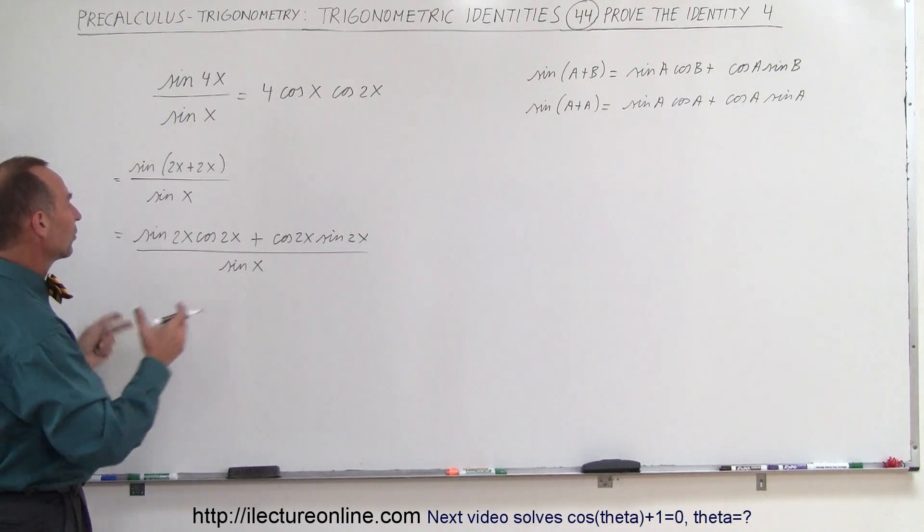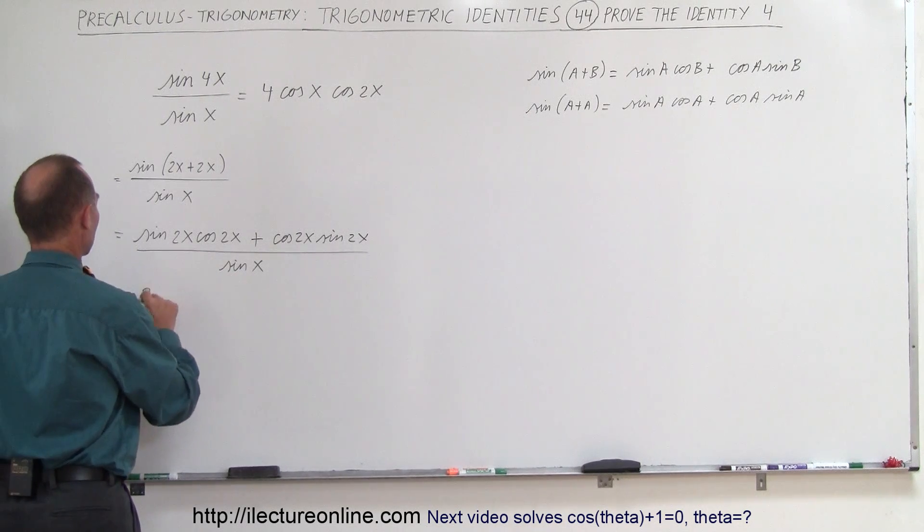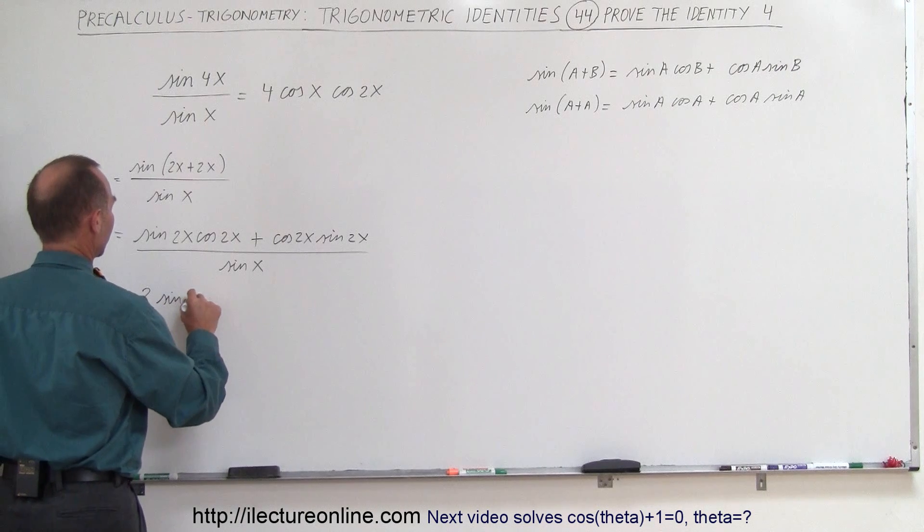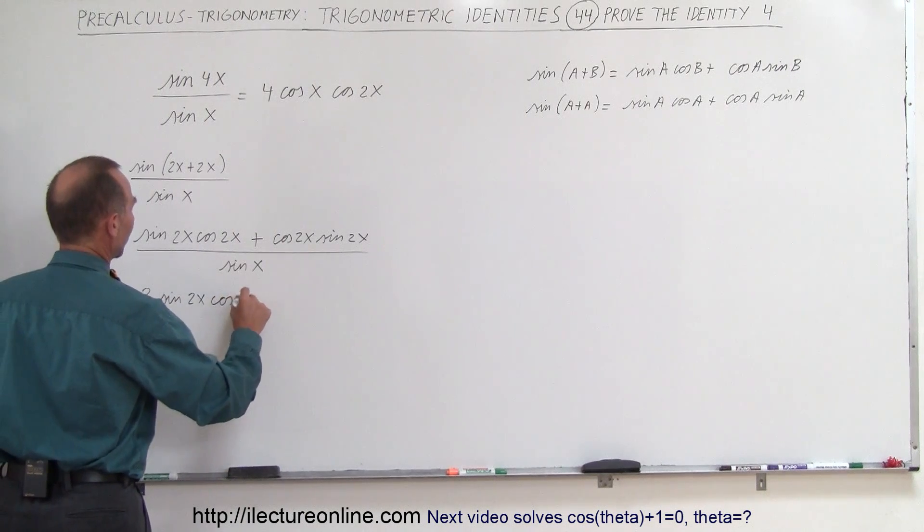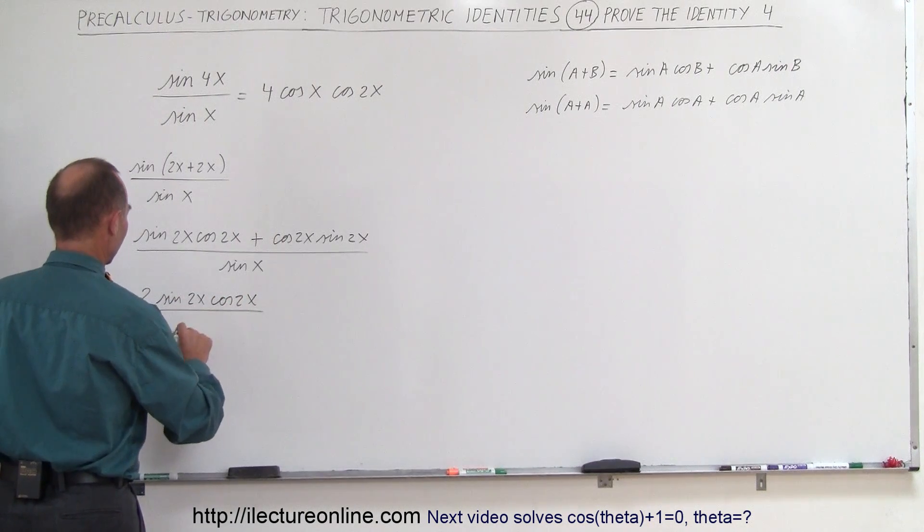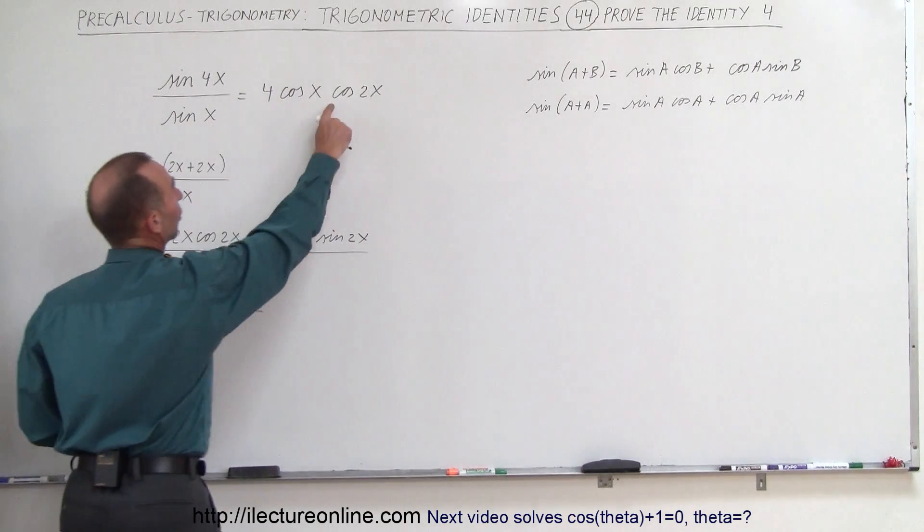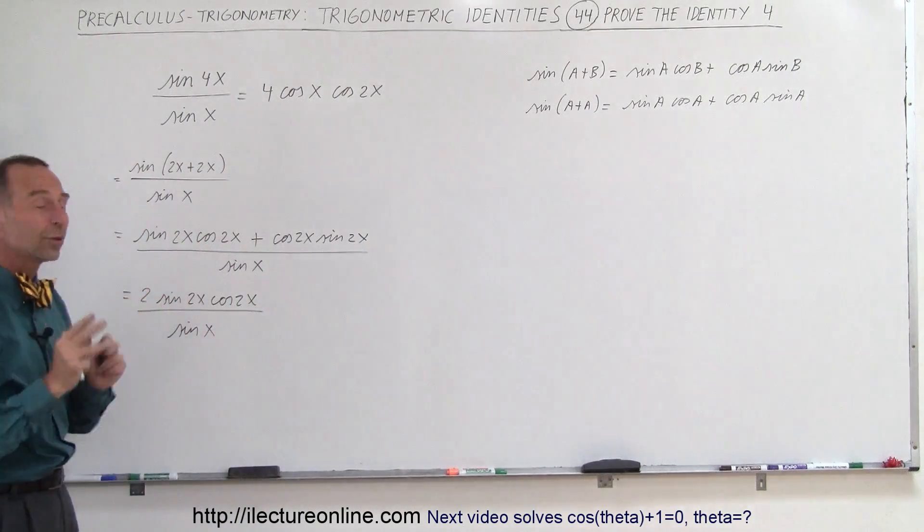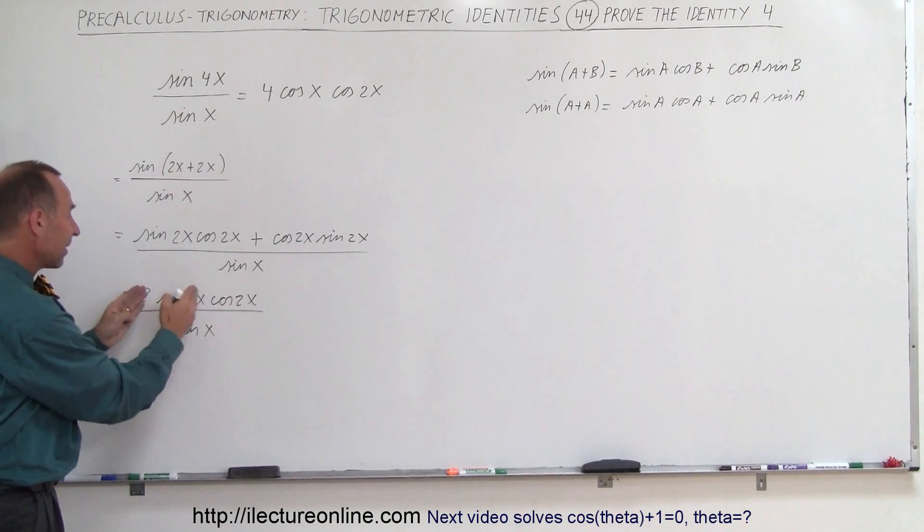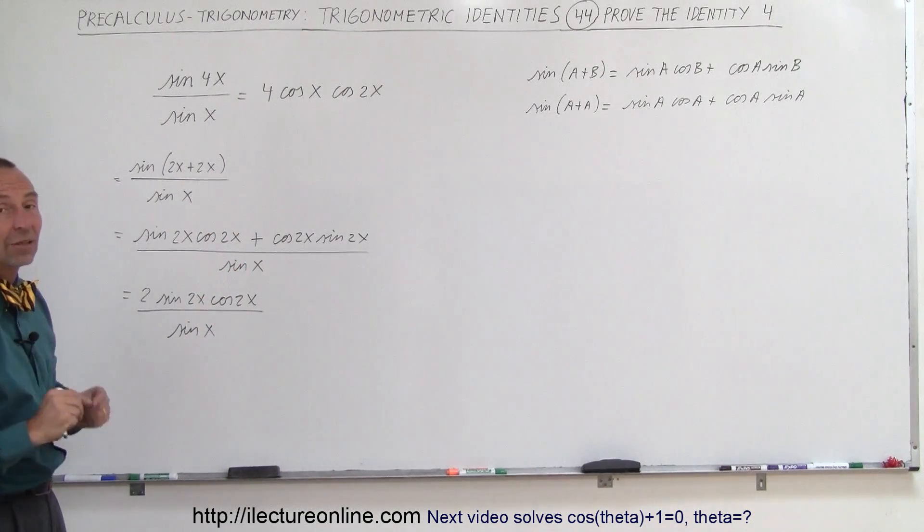Alright, now let's see here. There's two of those, so this is equal to two times the sine of 2x times the cosine of 2x divided by the sine of x. Notice that we have a cosine of 2x here and we have a cosine of 2x there, so I will not do anything with the cosine of 2x, but let's take the sine of 2x and expand it like we did just the same.